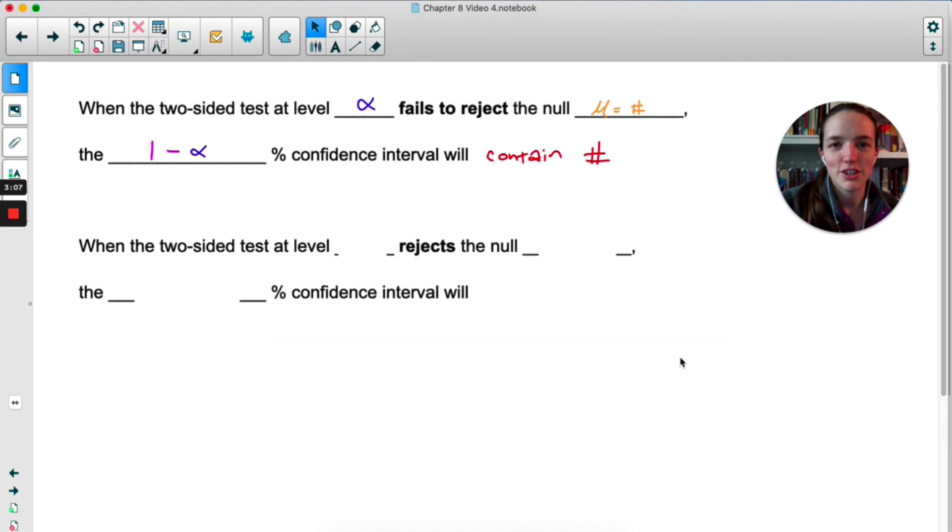If we're failing to reject the null, we haven't found convincing evidence that the mean is different than our number, our 29.5, which means that 29.5 is going to be in the interval if we were to make a confidence interval.